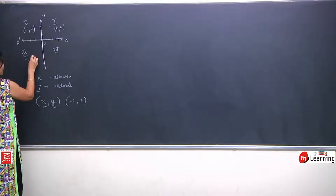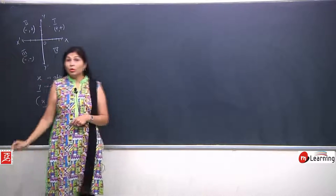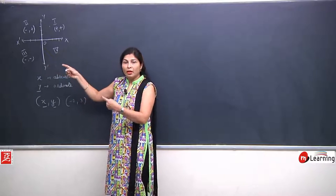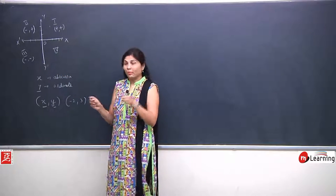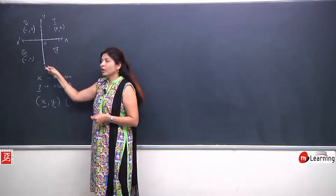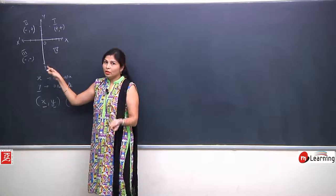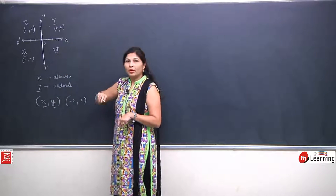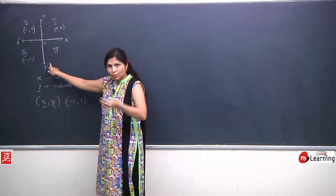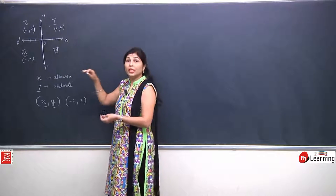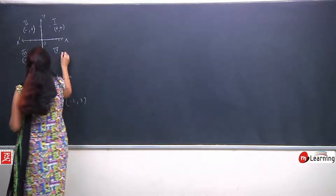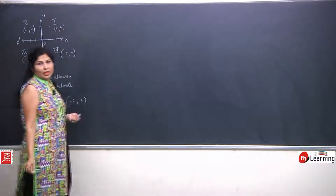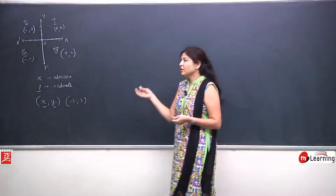Third quadrant mein x bhi negative hoga, y bhi negative hoga — why? Because x left side mein ja raha hai, origin se left side hai toh negative, and similarly y origin se downwards direction mein hai then it is also negative. Toh yahan pe jo bhi point hoga uske coordinates hamesha negative, negative aayenge. And fourth quadrant mein y is negative because woh downwards hai, but x is positive because woh origin ke right side mein hai — so coordinates plus and minus aayenge.